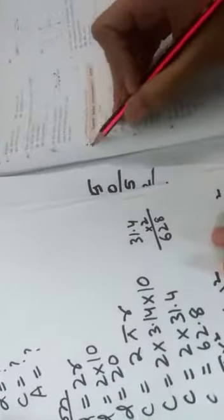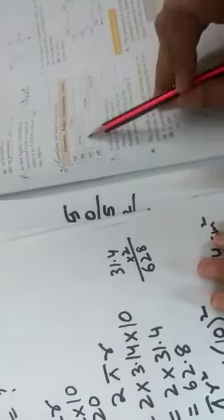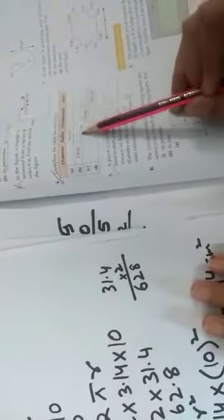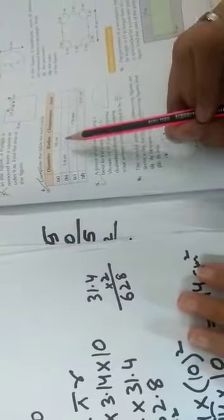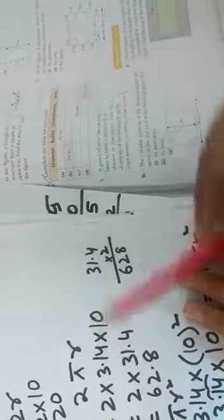Now come to question number 4. Skip question number 3. Here a table is given to you. You have to complete the table for each circle. We have discussed about the formulas of circle, diameter, radius, circumference and area. You have to find out the values.